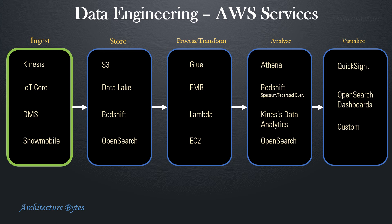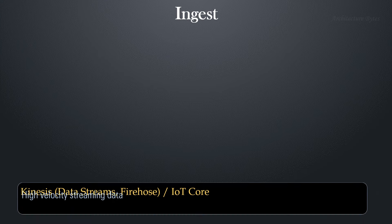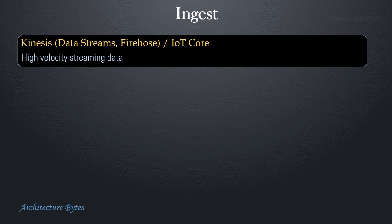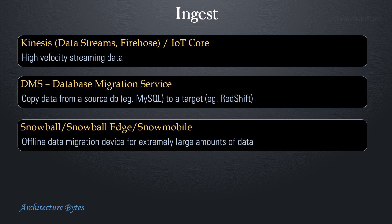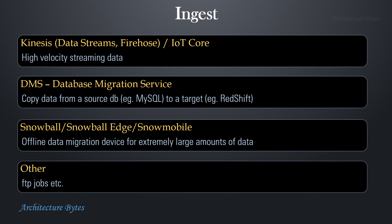Data ingestion: Kinesis and IoT Core can be used to ingest large volumes of high velocity streaming data. DMS or Database Migration Service is used to migrate data from one database to another. Snow family of devices are useful for physically transporting extremely large volumes of data via devices. In addition, you can use other means like FTP to bring in the data.